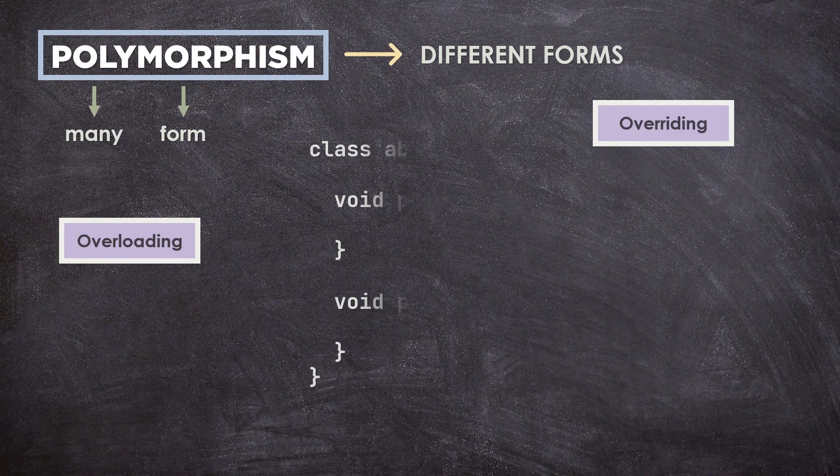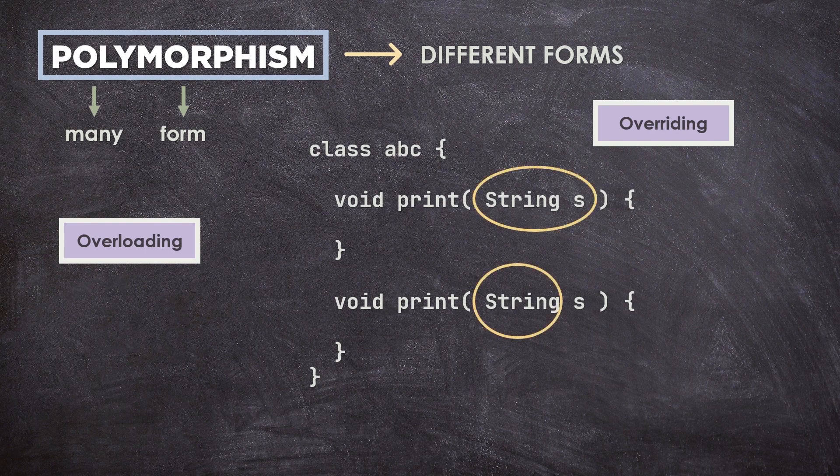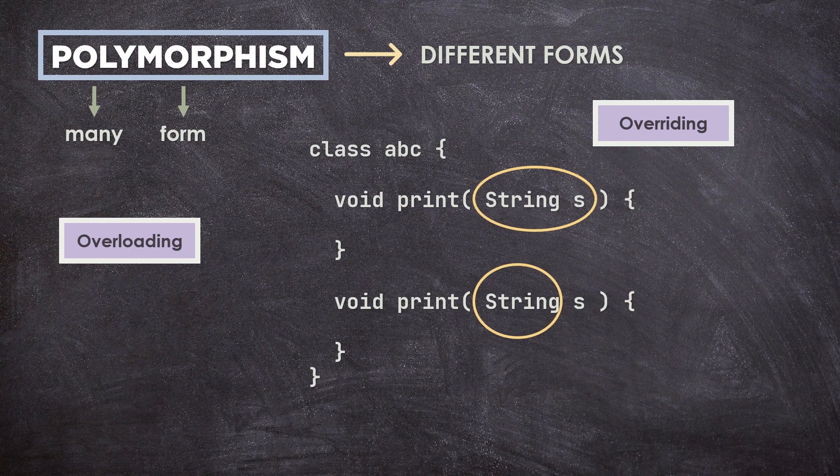Overriding is defining a method in a subclass with the same name, type, and signature as a method in its superclass, and the overridden method is called at runtime based on the object at runtime.